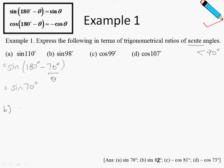Sine of 98 degrees can be written as sine of 180 degrees minus 82 degrees. Let's identify theta: 82 degrees is our theta. So using the formula, this is just sine of 82 degrees.